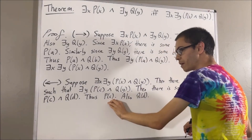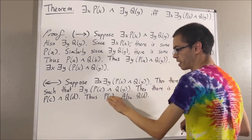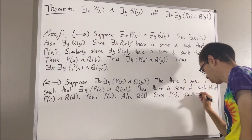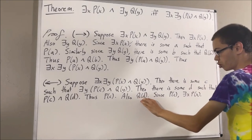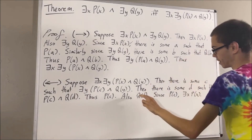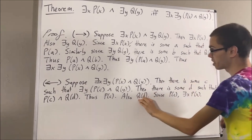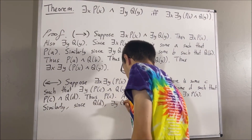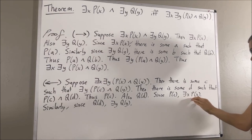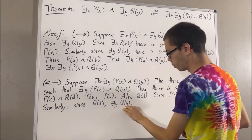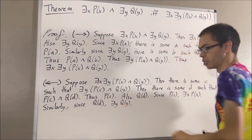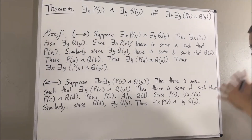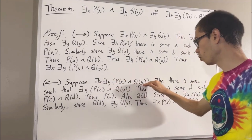Since p of c is true, this means there is at least one object that satisfies statement p. So this tells us that there exists an x such that p of x. Similarly, since q of d is true, this means there is at least one object which satisfies statement q. So this tells us that there exists an object y such that q of y. So since there exists an object x such that p of x and there exists an object y such that q of y, we have that this and this is true. So putting this together, we see that under the assumption this is true, we have that this is true.